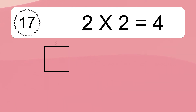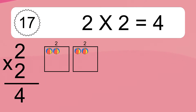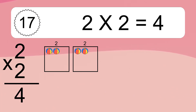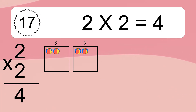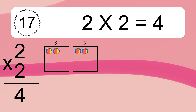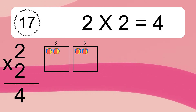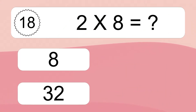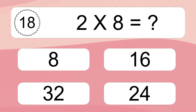2 times 2 equals what? 2 times 2 equals 4. We have 2 boxes, and each box has 2 colorful balls inside. If you count all the balls in all the boxes together, you will have 2 times 2 balls. This equals 4 balls.